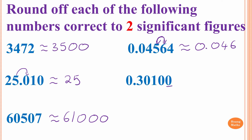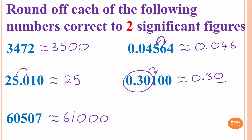Remember: zeros at the end of a decimal number are significant. So we have 1, 2, 3, 4, 5 — that is 5 significant figures. We want 2, so we write 0.30. We check the number after 0, which is 1 — less than 5, so we round down. The answer is 0.30. For a decimal number, the zero at the end is significant, so we have 2 significant figures.